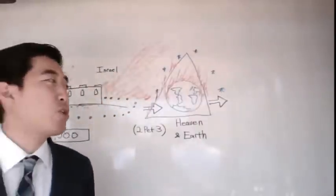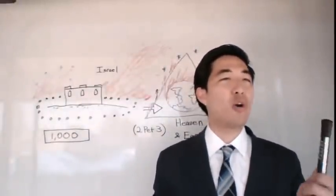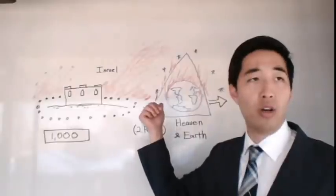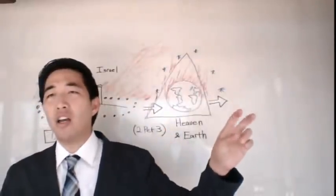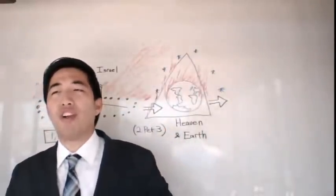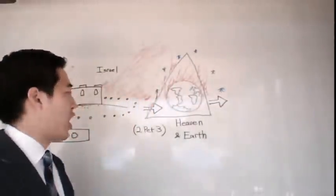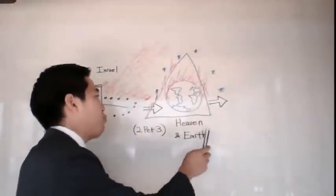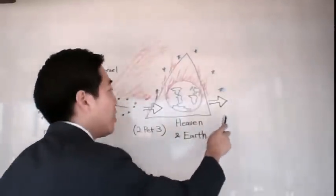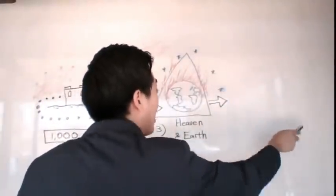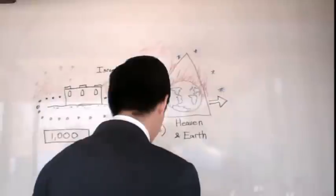Not only that, what's interesting is if you keep reading 2 Peter 3, it says a new heaven and a new earth after it's burned. And if you look at Revelation 21, once the heaven and earth is gone, at the first verses of Revelation 21 it says there's a new heaven and new earth. So there is no doubt that 2 Peter chapter 3, that timeline would fit over here. After the millennium, it's burned up.